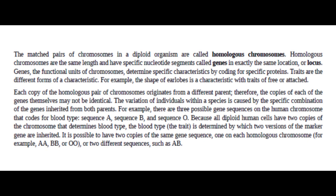The matched pairs of chromosomes in a diploid organism are called homologous chromosomes. Homologous chromosomes are the same length and have specific nucleotide segments called genes in exactly the same location, or locus. Genes, the functional units of chromosomes, determine specific characteristics by coding for specific proteins. Traits are the different forms of a characteristic — for example, the shape of ear lobes is a characteristic with traits of free or attached.